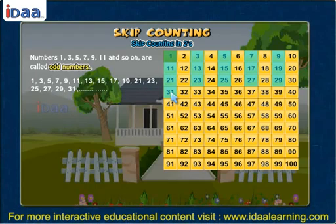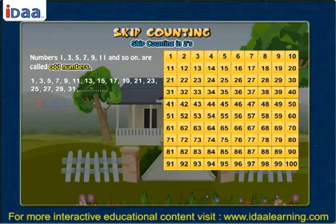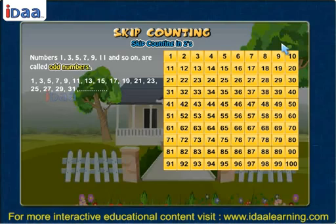Numbers 1, 3, 5, 7, 9, 11 and so on are called odd numbers.